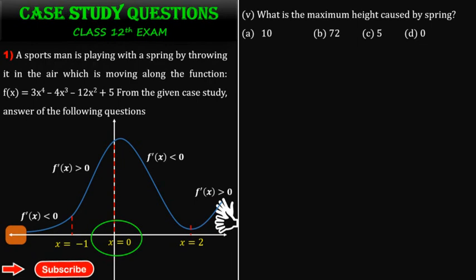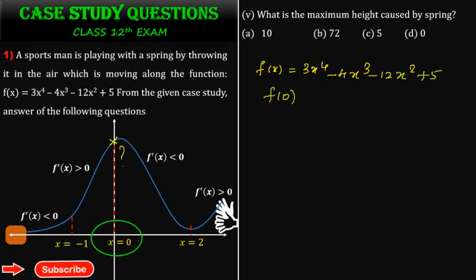Fifth question: what is the maximum height? We substitute x = 0 into the original function f(x) = 3x⁴ - 4x³ - 12x² + 5. f(0) = 0 - 0 - 0 + 5 = 5. Therefore, the maximum height of the spring is 5 units.